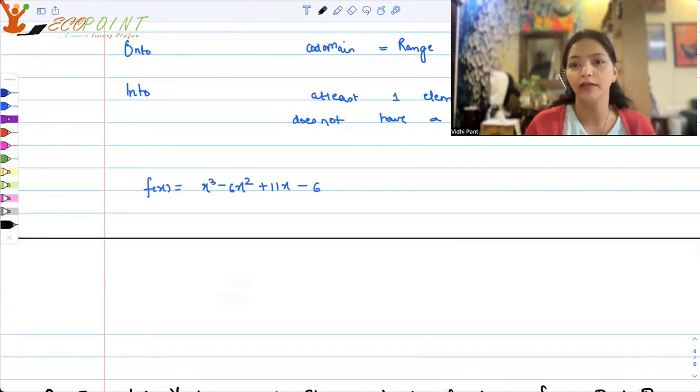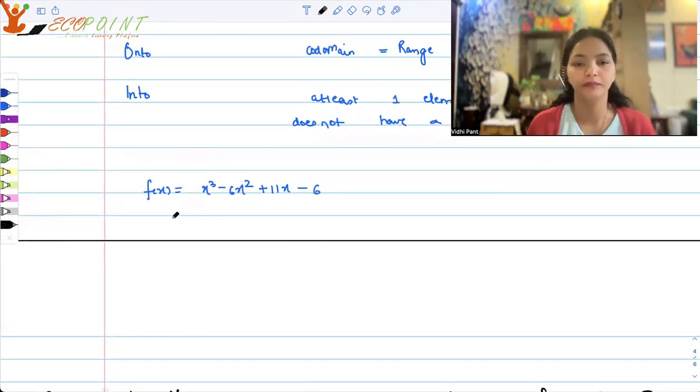So with hit and trial, you can do that. If you carefully take that exercise, you will realize that this cubic is same as (x minus 1) into (x minus 2) into (x minus 3).